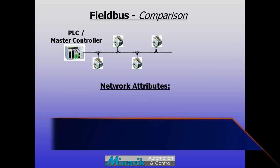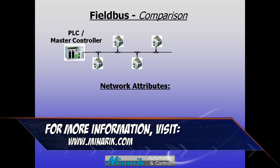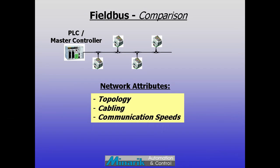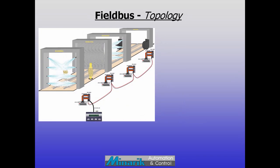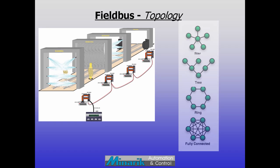Some comparison is possible by looking at major features such as topology, cabling and communication speeds. Topology refers to the shape or cable layout of the network. Line, tree, ring and star are common, and some allow hybrids.